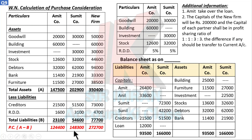Now total the assets and total the liabilities, then subtract liabilities from assets to get your purchase consideration. Assets total: 1,24,400. Sumit's total: 1,48,300. Keep the total column as it will be useful when making the balance sheet, so it is important to calculate the total so that the balance sheet can be prepared quickly. Purchase consideration is now done.